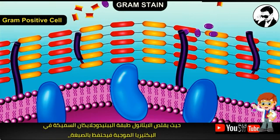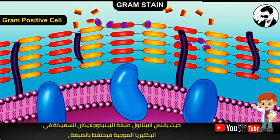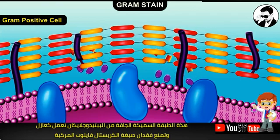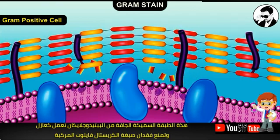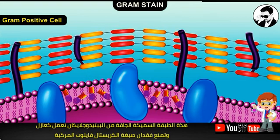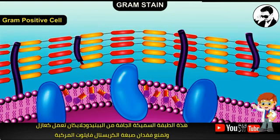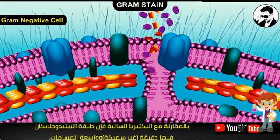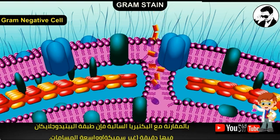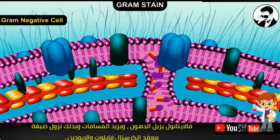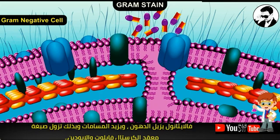Generally, the Gram stain correlates with the cell wall structure among bacteria. Ethanol is thought to shrink the thick peptidoglycan in gram-positive cells, thus retaining the dye. The thick, dehydrated peptidoglycan layer of gram-positive bacteria appears to be a permeability barrier preventing the loss of the crystal violet-iodine complex. In contrast, the peptidoglycan in gram-negative bacteria is very thin and has large pores; ethanol may extract lipids and increase porosity, thus removing the crystal violet-iodine complex.